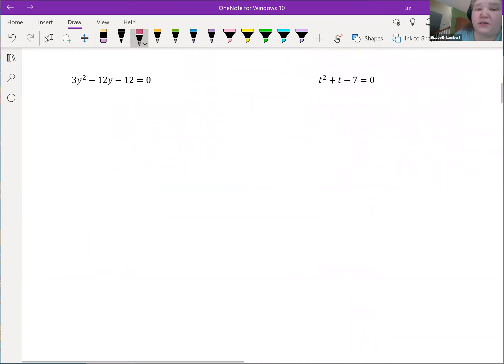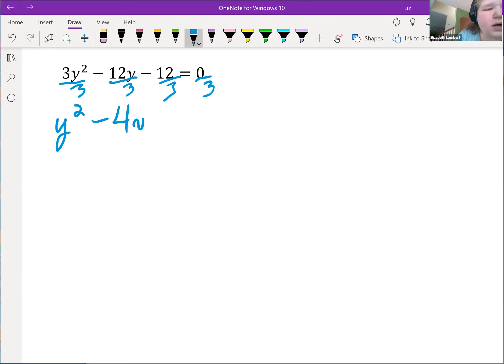All right. So now things are getting a little more interesting. We have an A number. Now the whole completing the square process divide by two and square it is dependent on the A number, the number in front of the squared term being one. So if it is not one in your starting problem, then you make it one. And the way you make it one is by dividing by the number. So in this case, it is a three. So we're going to divide everything by three. And since this is an equation, as long as I do the same thing to both sides, I'm all good. Everybody gets divided by three. So now it is y² - 4y - 4 = 0.